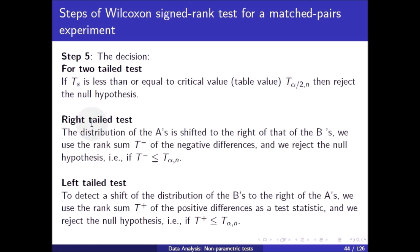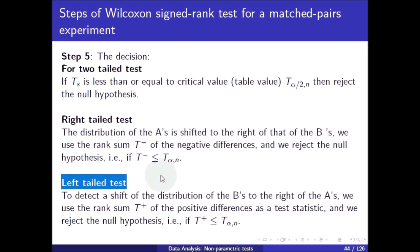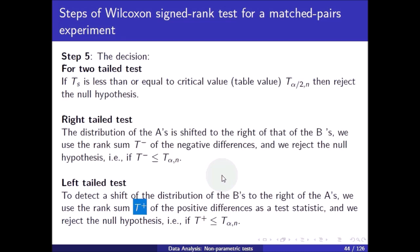For the right-tailed test — detecting that the distribution of the As is shifted to the right of the Bs — use the rank sum T minus of the negative differences, and reject the null hypothesis if T minus is less than or equal to t_{alpha, n}. For the left-tailed test — detecting a shift of the distribution of the Bs to the right of the As — use the rank sum T plus of the positive differences, and reject the null hypothesis if T plus is less than or equal to t_{alpha, n}.